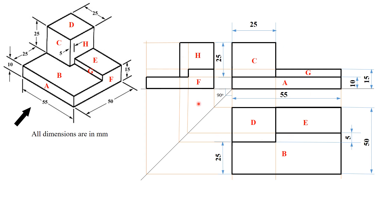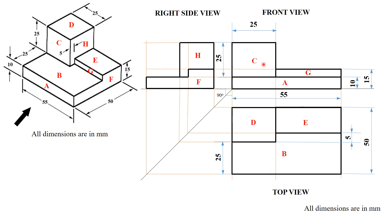This is how you convert an isometric projection to an orthographic projection. Label the views: front view, top view, and right side view, with all dimensions in mm. The surface names A through H were used only for understanding purposes — when solving problems, there is no need to write surface names. Just draw the surfaces. Thank you.